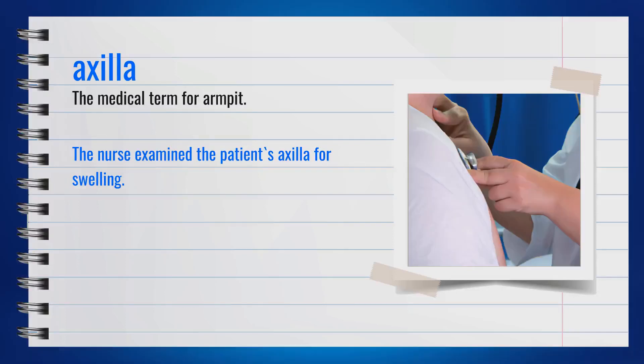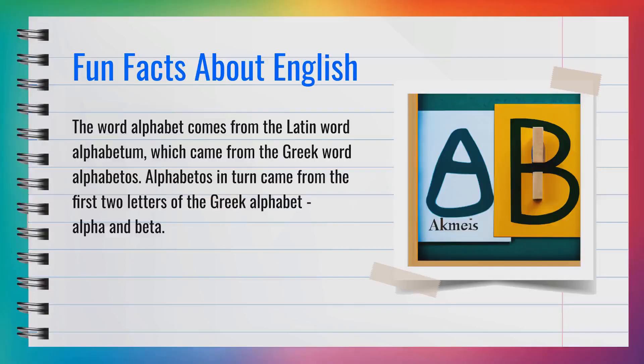The word axilla, spelled A-X-I-L-L-A, is a noun. It is the medical term for armpit. For example, the nurse examined the patient's axilla for swelling. In summary, axilla simply means armpit.